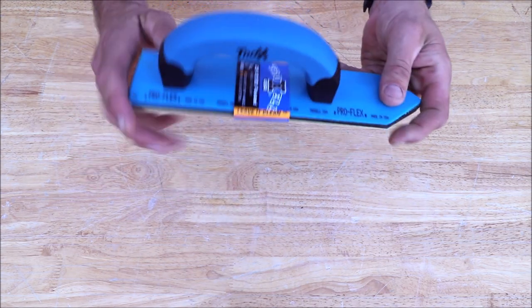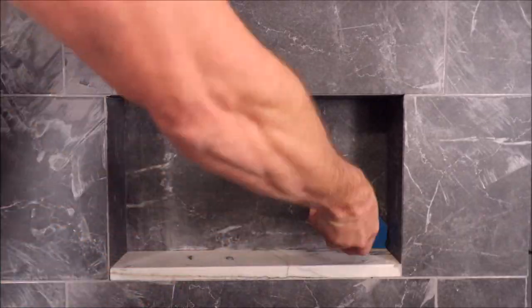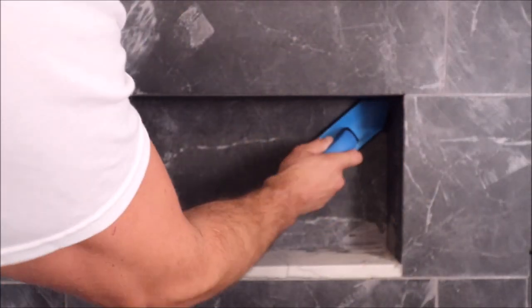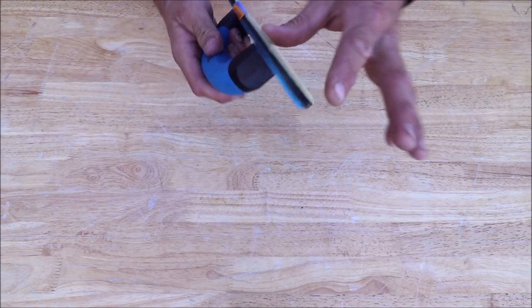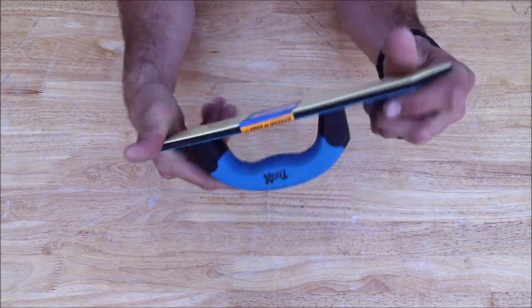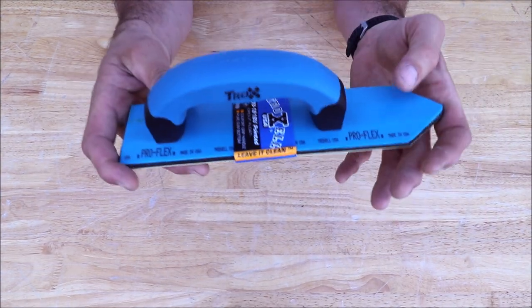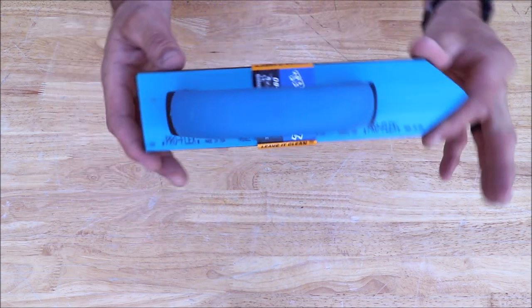And last, we have this guy right here. Your pointed tip. This is great for your beveled tiles, your hard to reach areas. Inside of a shampoo niche as well. This right here, if you do a lot of backsplashes, this is a fantastic time saver of a grout float for grouting backsplashes.